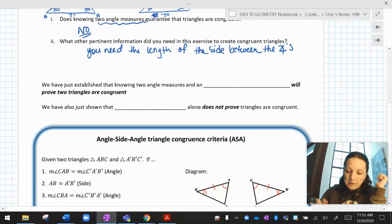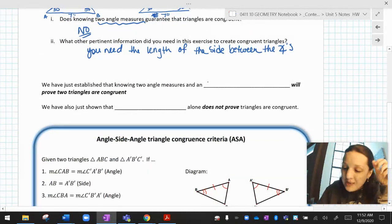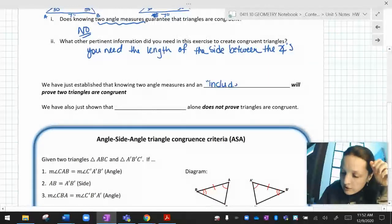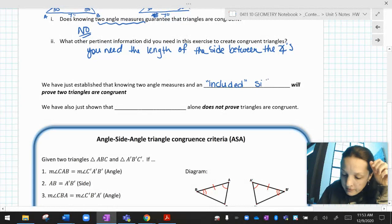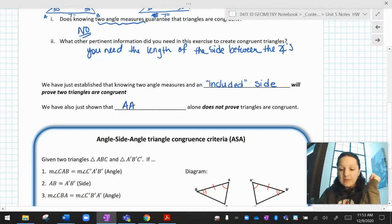So you need the length of the side between the angles. We have just established that knowing two angle measures and an included side included between them will prove triangles congruent.